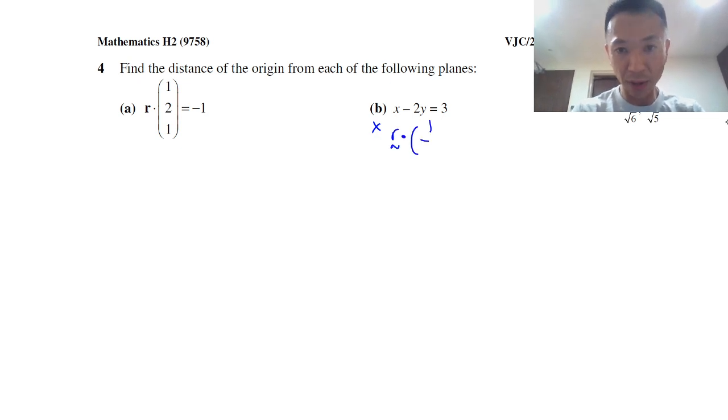Because this plane is essentially r dot (1,-2,0) equals 3. So you can do this one yourself, because if you can understand for a, then for b you can do it on your own. The answer is just given.